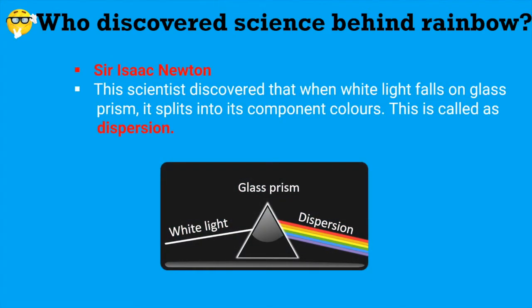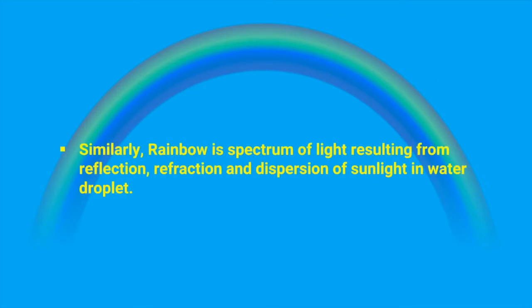Very important question: who discovered science behind this rainbow? Sir Isaac Newton. This scientist discovered that when white light falls on glass prism it splits into its component colors. This process is called dispersion. Similar to this dispersion, rainbow is spectrum of light resulting from reflection, refraction and dispersion of sunlight in water droplet. Let's study these three terms separately.